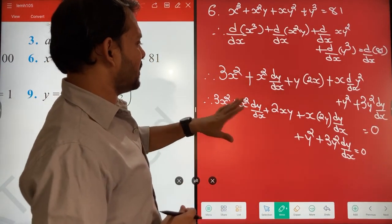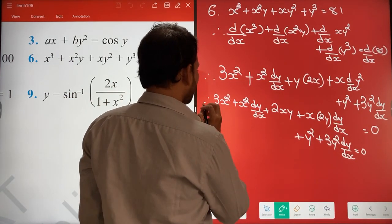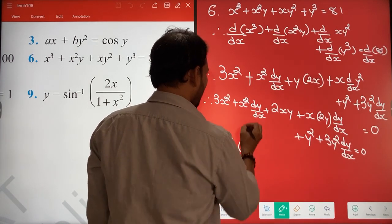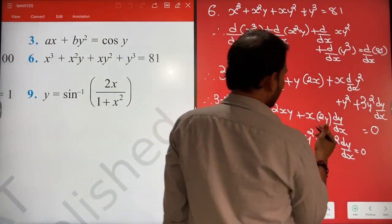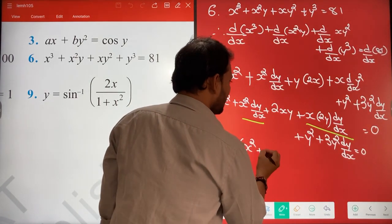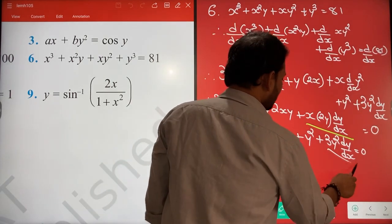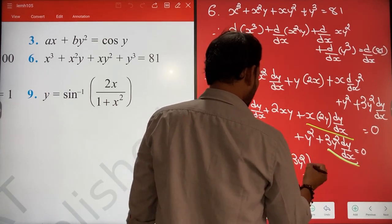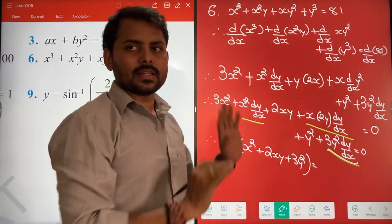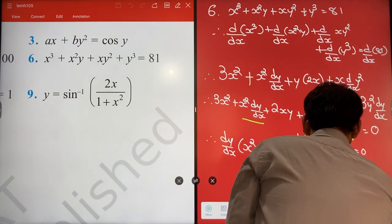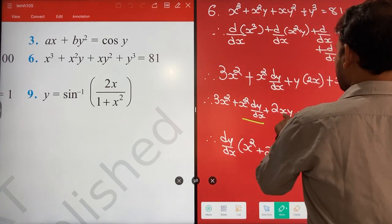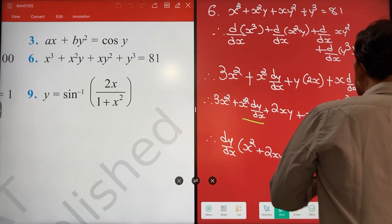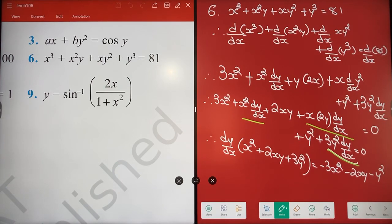So 3X2, yeh sab kuch ho gaya. Ab kya karen, constant dy by dx nikal lete hain pehle to. Yaha se dy by dx common nikal liya - to yaha bhi kya bacha? X2 ismein se, phir doosra kaha hai, yaha hai, usmein se bhi dy by dx common nikal liya, to kya bacha? 2XY. Phir yaha se bhi dy by dx common nikal liya, to kya bacha? 3Y² done? That is equals to, baaki jo bhi bacha hai, wo sab kuch doosri side leta. So 3X2 udhar gaya to minus 3X2, 2XY udhar gaya to minus 2XY, Y square minus Y square. Done? Yes, okay.